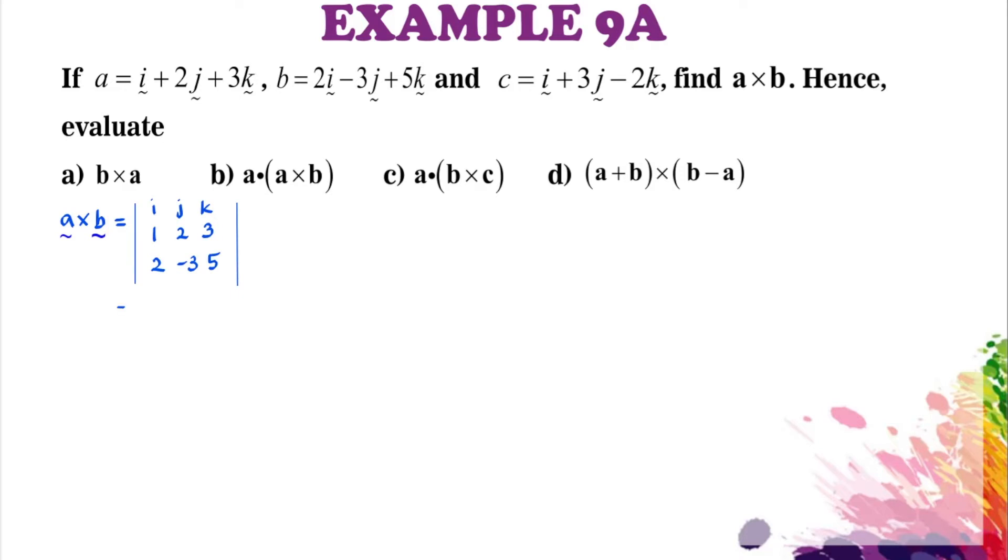For the i component we're going to have 10 plus 9. For the j component we're going to have 5 minus 6, and for the k component we're going to have negative 3 minus 4. So your product will equal 19i plus j minus 7k.